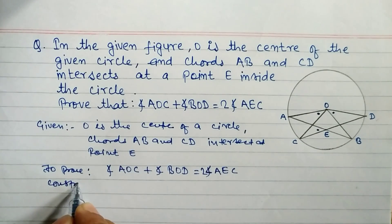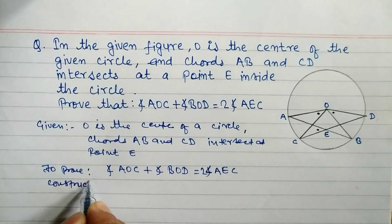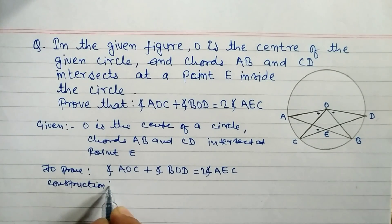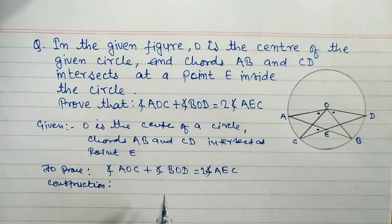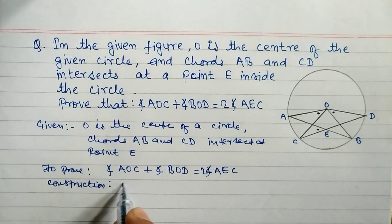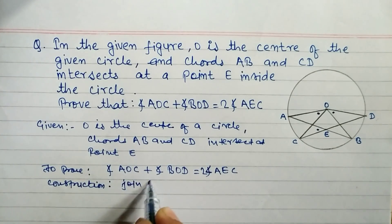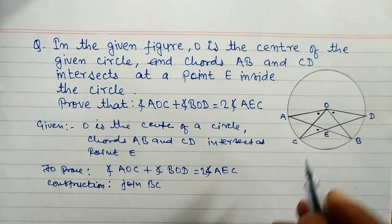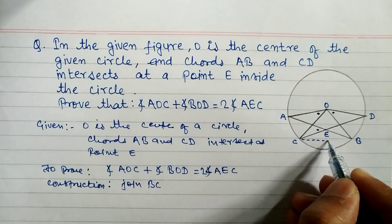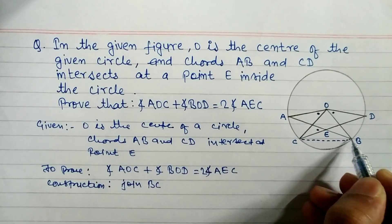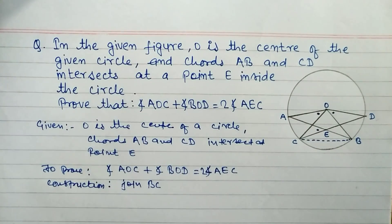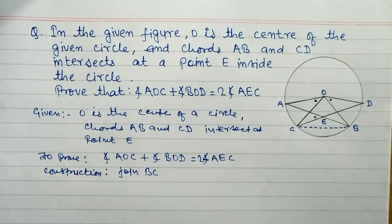For construction, we are going to draw an extra line. We will join BC — that is, join the points B and C with a line segment.